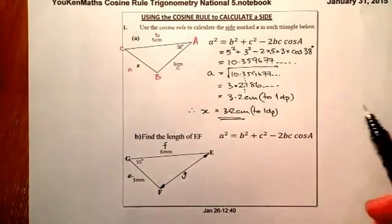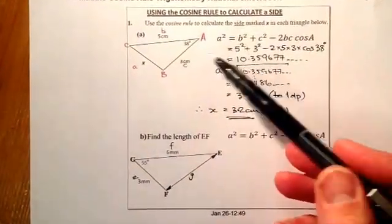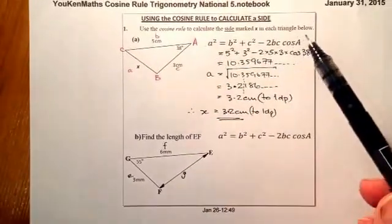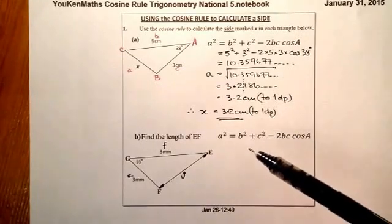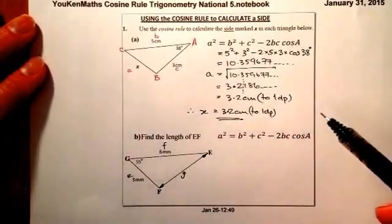So what I'll do first of all is I'll change the formula around. Now, there's two options that we have here. We can re-label the triangle out so that it fits in with the same values that I have here, so that I can use the formula straight, or I can change the formula around. I'm going to change it around this time, and you just work out which is best for you.